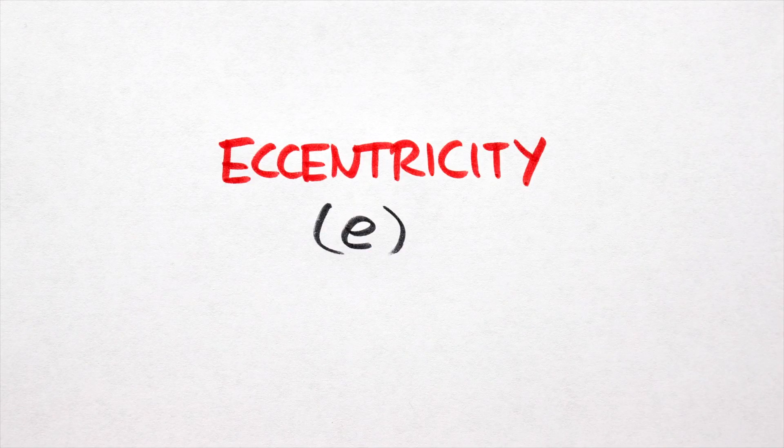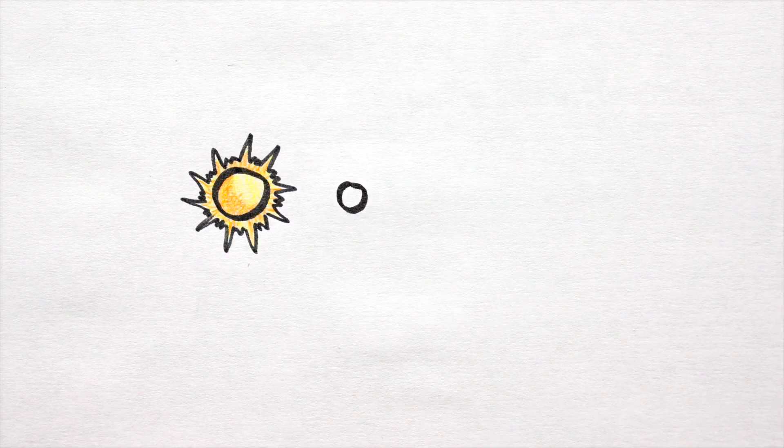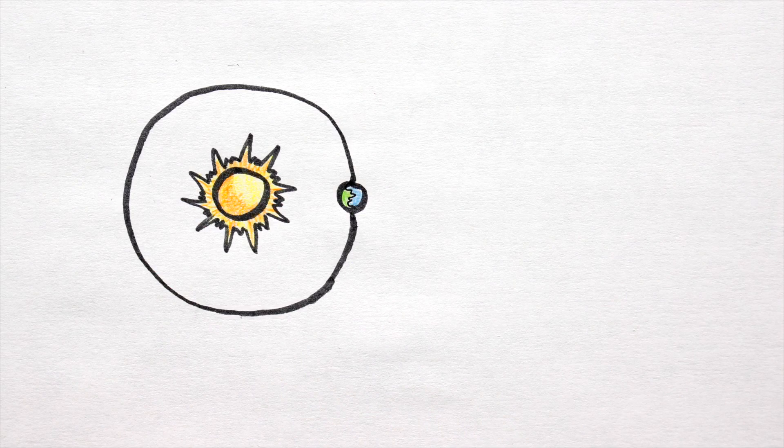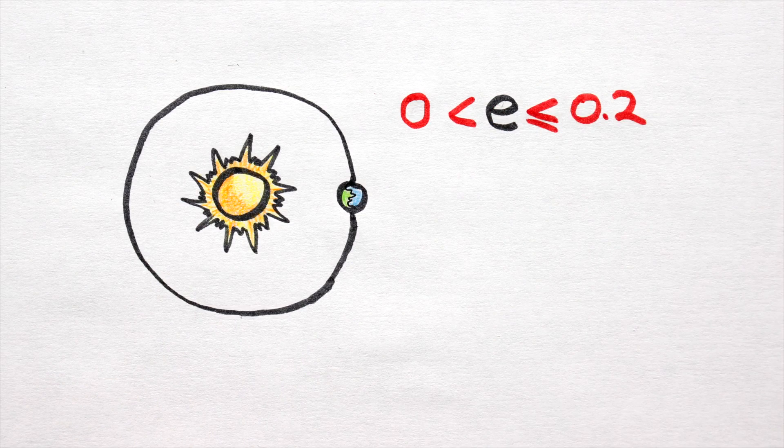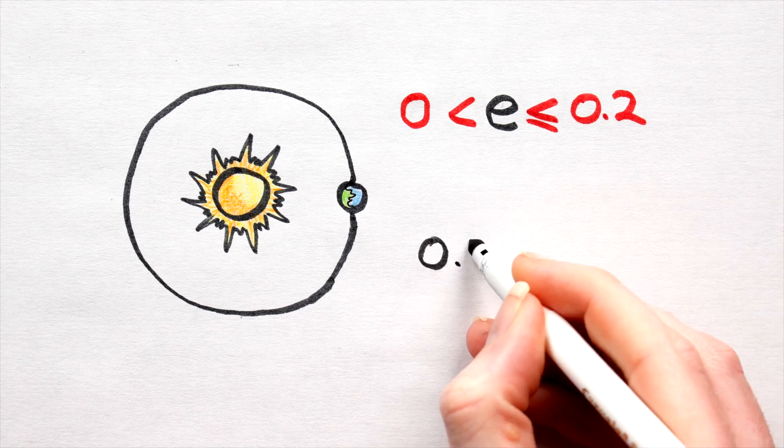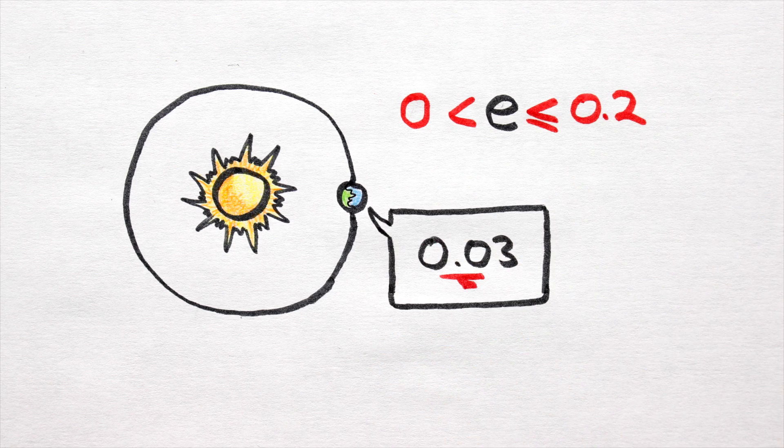Eccentricity. Habitable worlds will need to orbit on nearly circular paths. Thus, a safe eccentricity range here is anything greater than 0 and less than or equal to 0.2. I'll go with an orbital eccentricity of 0.03.